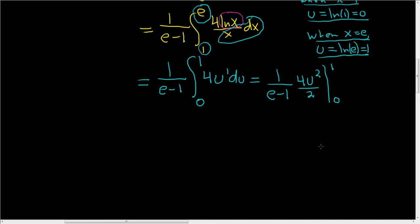Let's keep going. 4 over 2 is going to give us a 2, so this is 1 over e minus 1, and then we have 2u squared from 0 to 1.